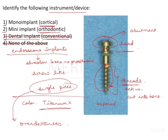Next is the mono implant or cortical implant. Cortical implants are similar to endosseous implants but they engage the cortical bone — the cortex, that is the body of the maxilla or mandible — and not the alveolar bone. Then there is the mini implant, which is used for orthodontics.